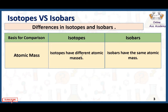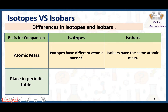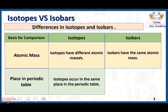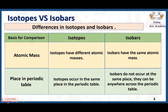Regarding placement in the periodic table: isotopes are atoms that belong to the same element, so isotopes occur in the same place in the periodic table. On the other hand, isobars do not occur at the same place in the periodic table because isobars involve different elements under discussion. When there are different elements, it is very clear that all of them belong to different places in the periodic table.